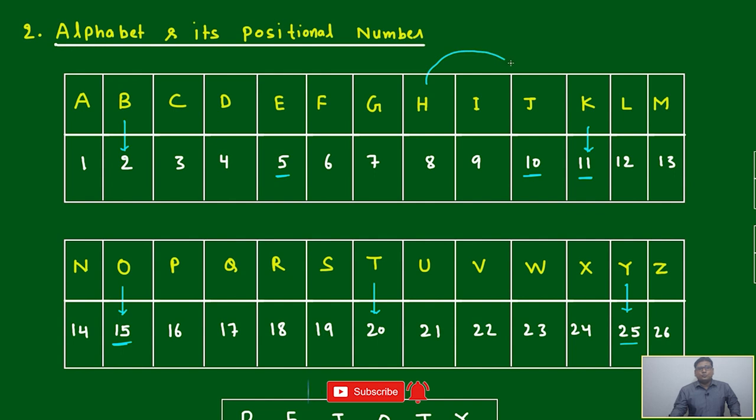Just suppose if we are saying after H it is plus 2, then many times it will be 8 plus 2, which will become 10. But many times, under pressure, we will put 11 incorrectly. Based on the given instruction in the question - including any alphabet, excluding any alphabet, or from where we are starting the counting - that is included or not included.